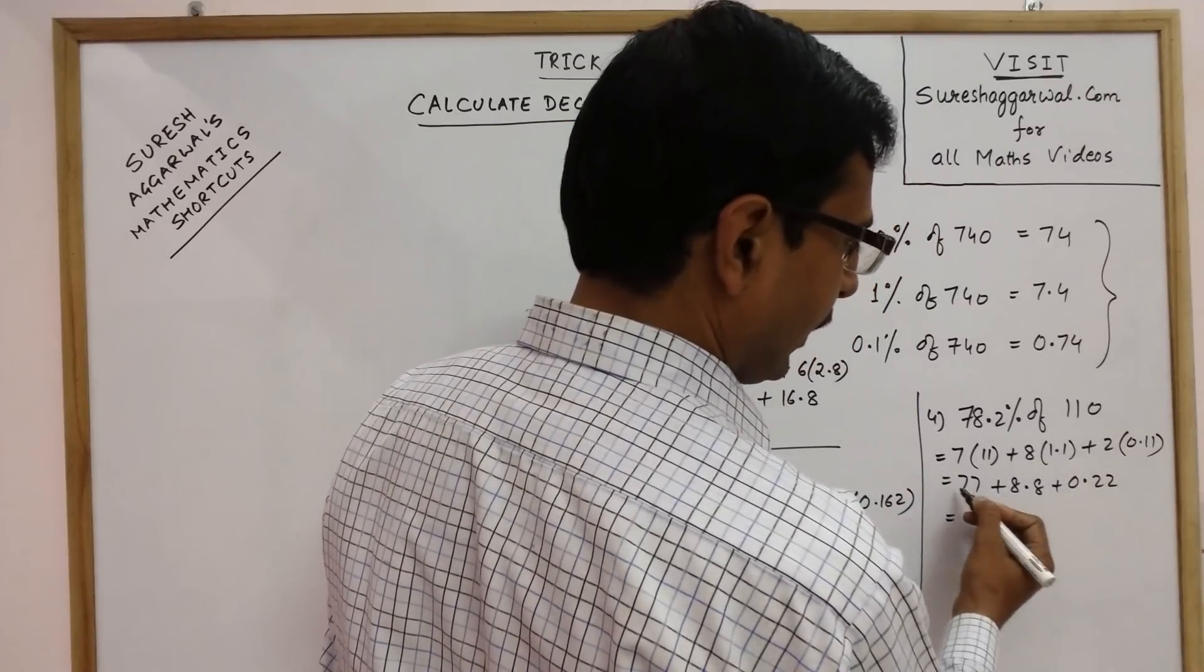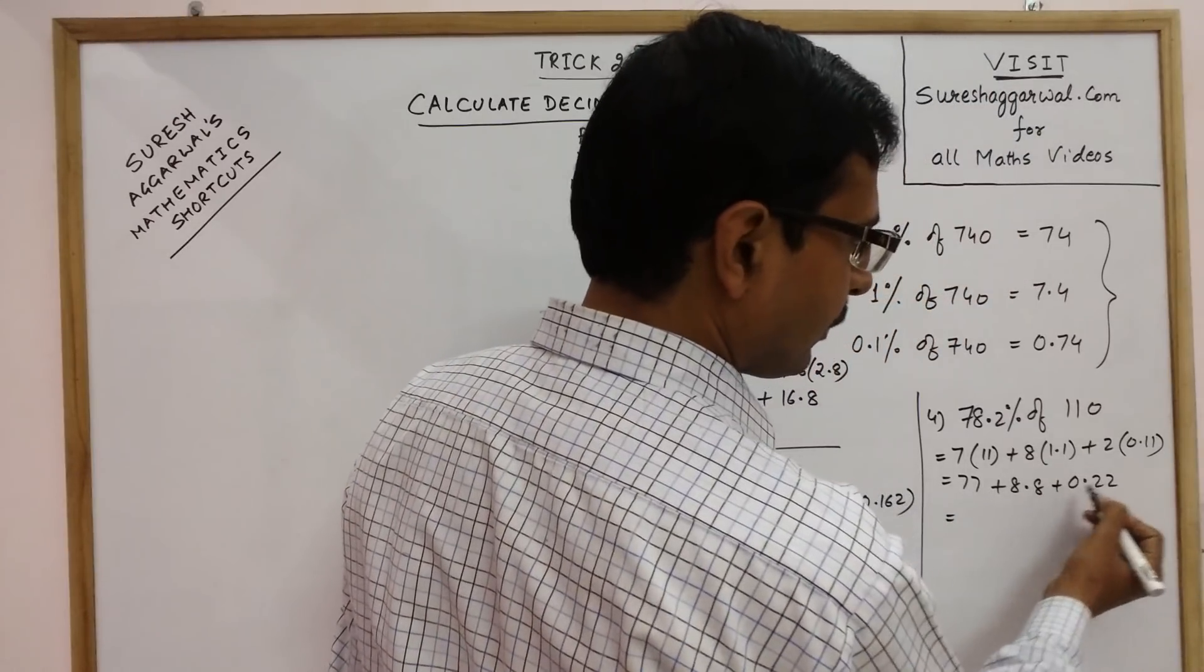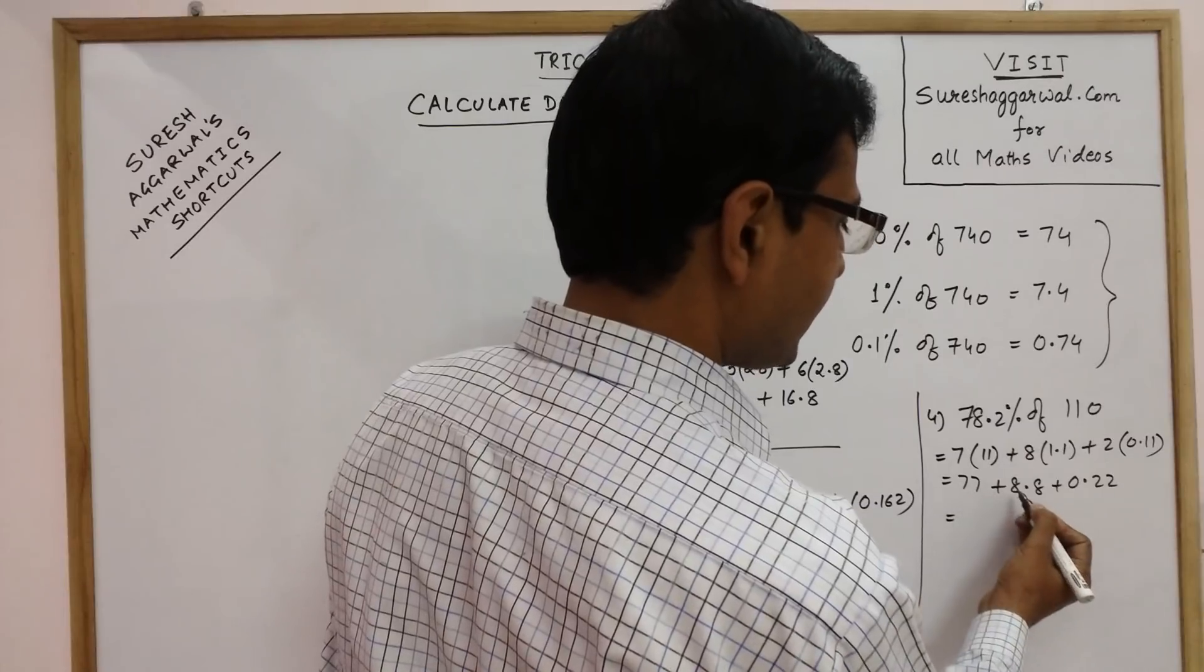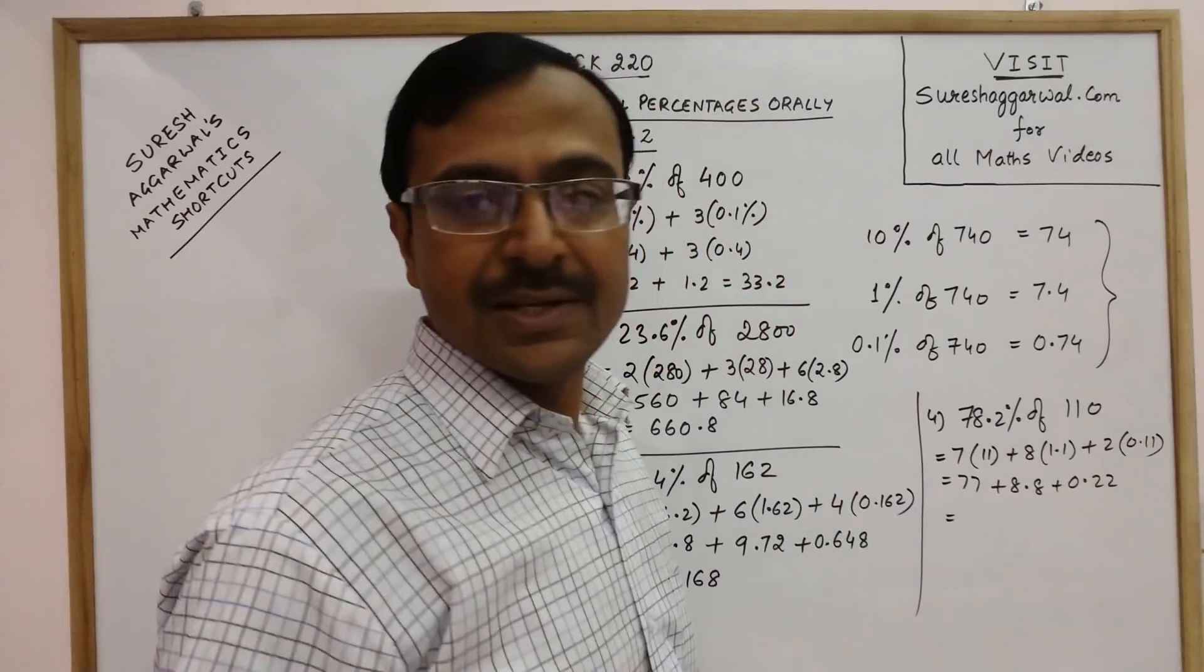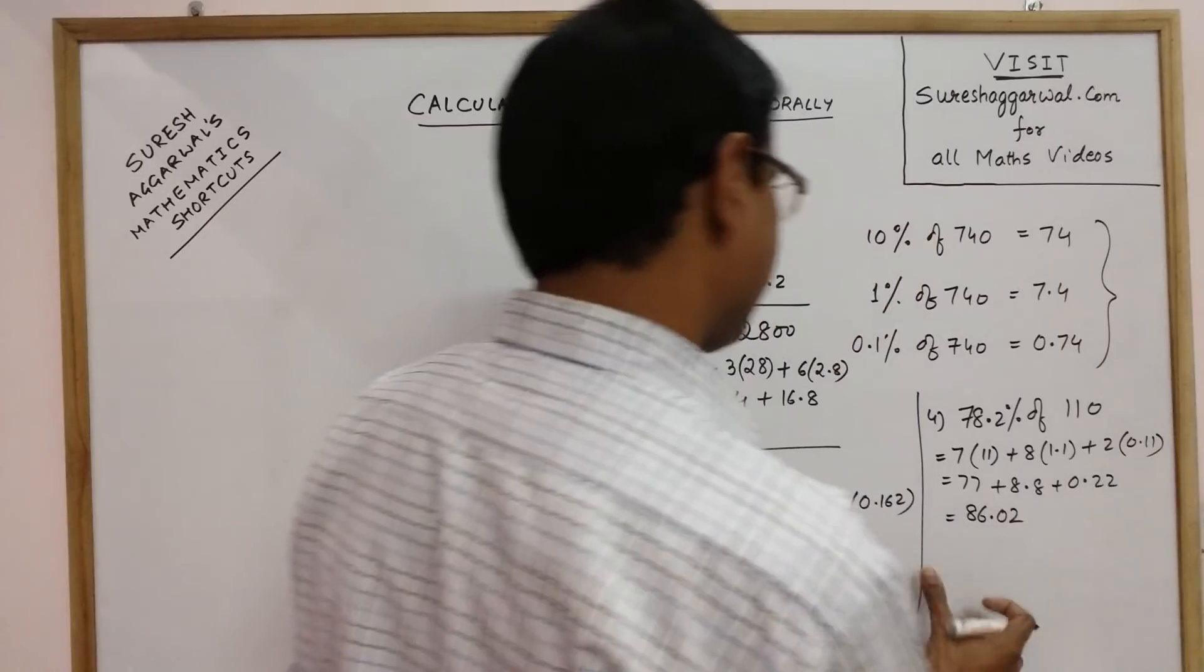So this is 77 plus 8.8 plus 0.22. So when you add this up, this is 0.8 and 0.22 is 1.02, and 77 plus 8 is 85. So 86.02. That is your answer of this percentage.